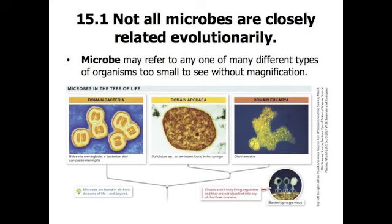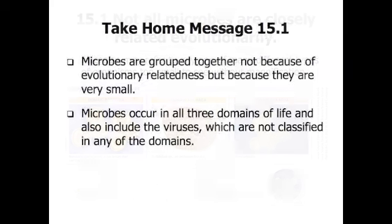In this chapter, we focus on the tiny organisms from each of these domains. The microbes in the domain bacteria and archaea are prokaryotic, although archaea have some characteristics like those of bacteria and some like those of eukaryotes. Protists are the mostly microbial members of the domain eukarya, and viruses are not classified into any domain at all because they are only at the borderline of life. Microbes are grouped together not because of evolutionary relatedness, but because they are very small.